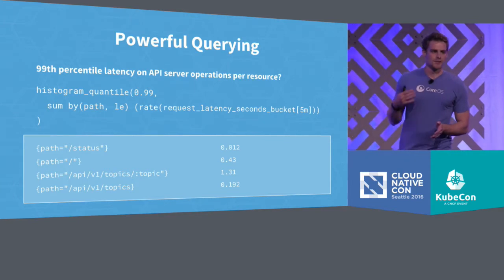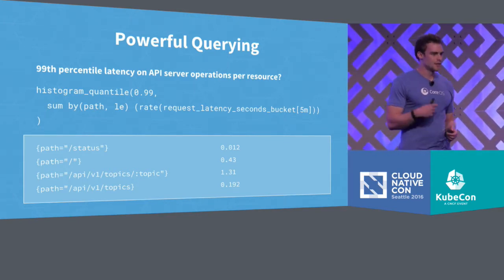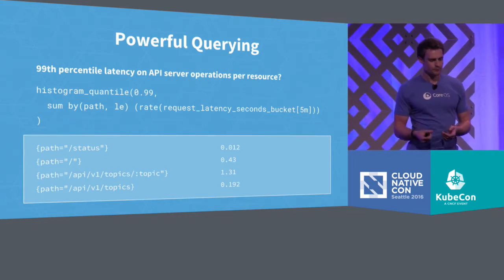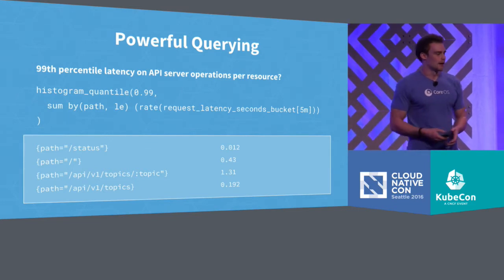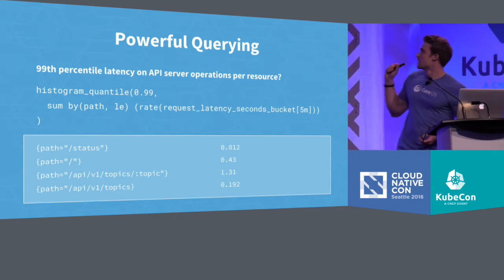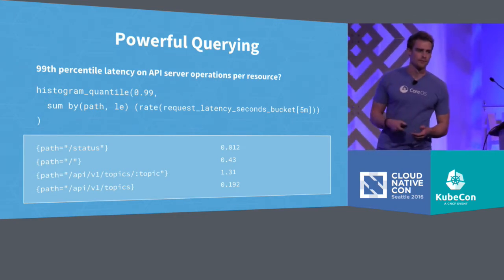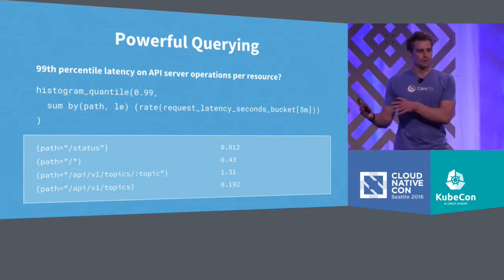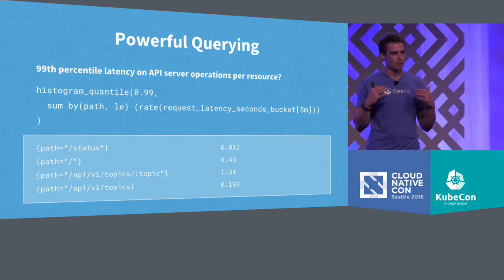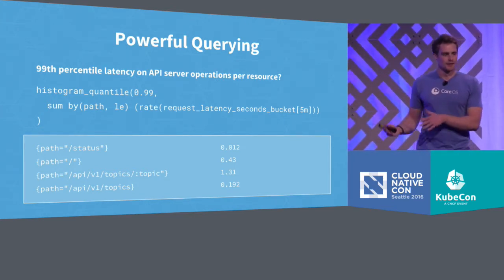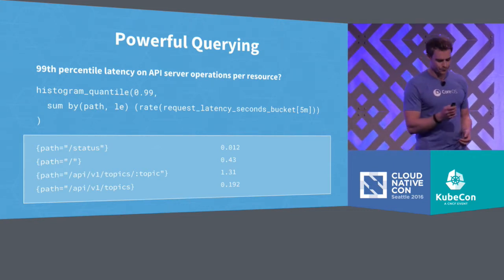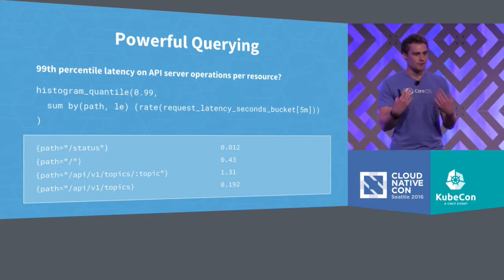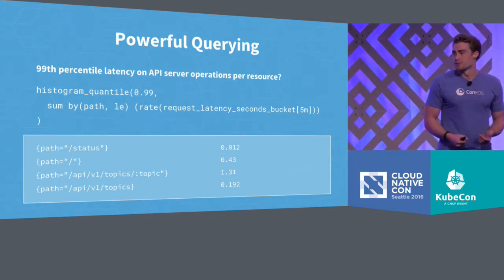Let's say we want to figure out what the 99th percentile latency is for individual HTTP paths across my service. You don't want to know this for every single pod — you want to know this across your entire service. Here I have a metric representing a histogram bucket for my request latencies. I can quite easily aggregate by preserving the path dimension and the bucket dimension, then hand this into the histogram_quantile function, which allows me to calculate any arbitrary percentile of this latency service-wide on the fly. And these queries directly translate into alerting as well — you can just take this query and add a threshold of one second, and you have an alert that will notify you as soon as any particular endpoint stops responding in under one second.